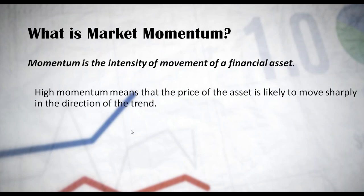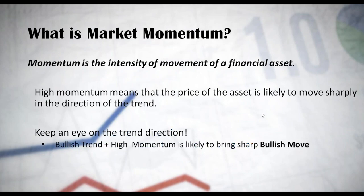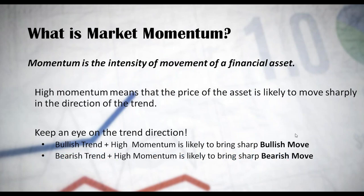High momentum means that the price of the asset is likely to move sharply in the direction measured by the trend. For this reason, you need to keep an eye on the trend direction. A bullish trend plus high market momentum is likely to bring a sharp bullish move. On the contrary, a bearish trend plus high momentum is likely to bring a sharp bearish move. Notice that sometimes there might be a lack of trend — no trend at all.